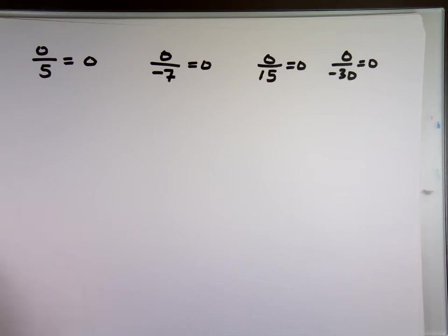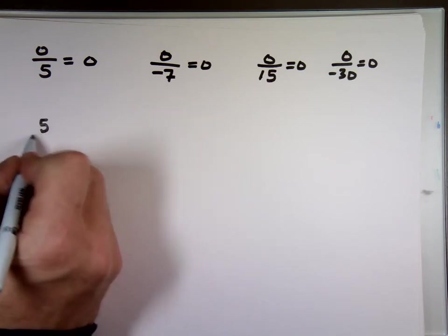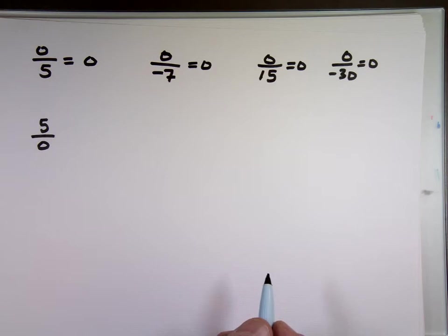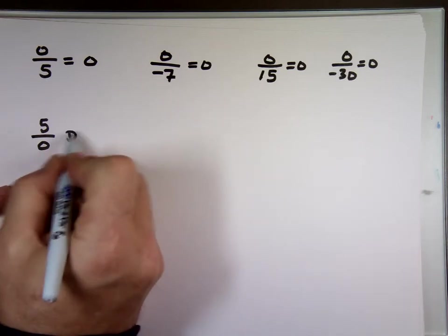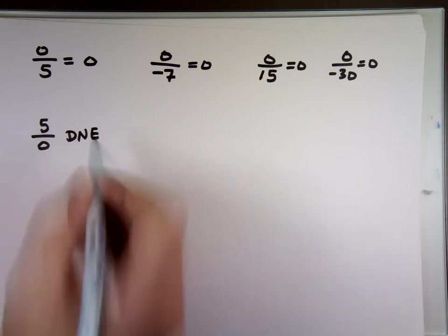Now what about the zero on the bottom? What's five over zero? Not zero, not five. One? Can't do it. Does not exist. Can't be done.